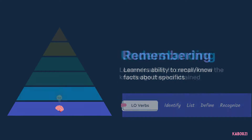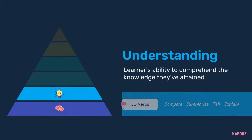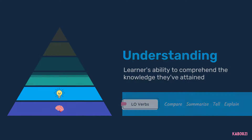Understanding — this refers to a learner's ability to comprehend the knowledge they've attained. At this level, learners have grasped meaning from the material and can translate that knowledge into a new context. To create learning objectives around understanding, use verbs like compare, summarize, tell, and explain.